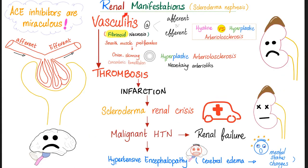Renal vasculitis — fibrinoid necrosis. Any vasculitis in any autoimmune disease is always fibrinoid necrosis. Rheumatoid arthritis vasculitis — fibrinoid necrosis. Lupus vasculitis — fibrinoid necrosis. Granulomatosis with polyangiitis, polyarteritis nodosa — fibrinoid necrosis. Smooth muscle proliferation leads to the onion-skin appearance of hyperplastic arteriolosclerosis, and necrotizing arteriolitis affects the afferent and efferent arterioles. Eventually, vasculitis and necrosis lead to thrombosis, infarction, and scleroderma renal crisis.